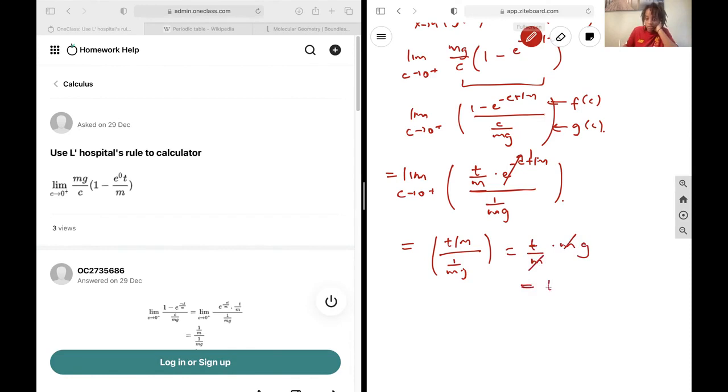The two m's will cancel and that will just leave us with t times g, and that's going to be our final answer.